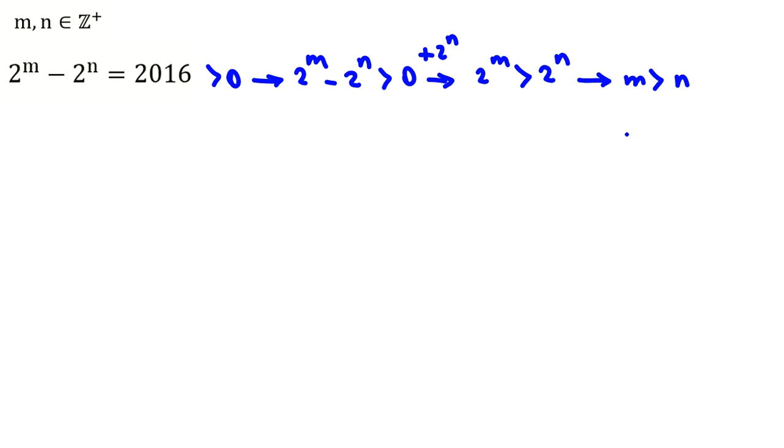So we can consider m equals n plus t, where t is also a positive integer. Now if we replace m with n plus t, then we have 2 to the m, which is n plus t, minus 2 to the n equals 2016.